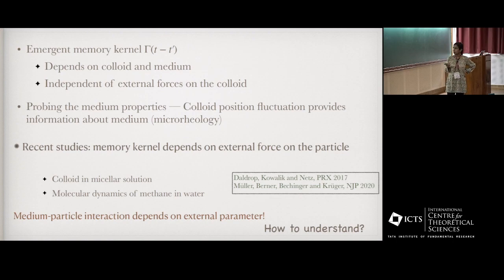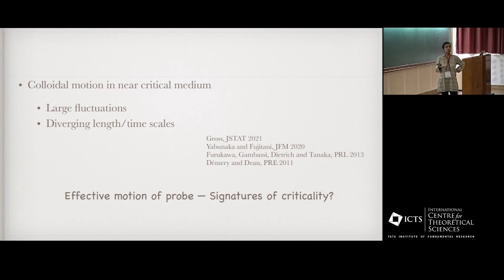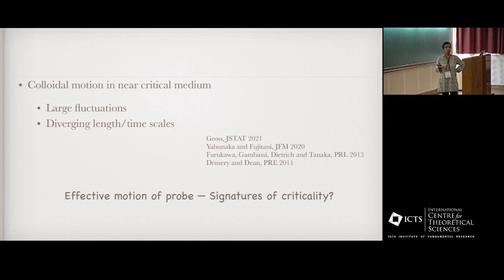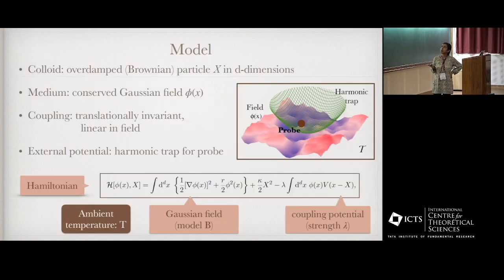That's a bit surprising, because if the medium-particle interaction starts to depend on an external parameter, that's a problem. So the question is how to understand it. Another related question I'm going to address is: suppose the medium is in a near-critical state, with large fluctuations and diverging length and time scales — what are the signatures of criticality that one can see in the motion of the probe particle? Can we say that the medium is undergoing a phase transition by looking at the probe?